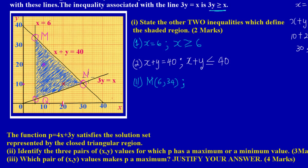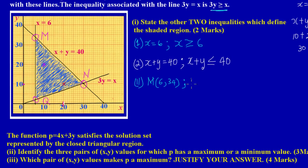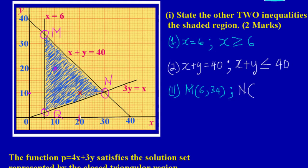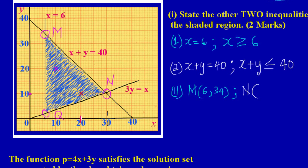Now let's find point N. From point N, going straight down to the x axis gives x = 30. Going straight across to the y axis gives y = 10. So the coordinates for N are x = 30 and y = 10.